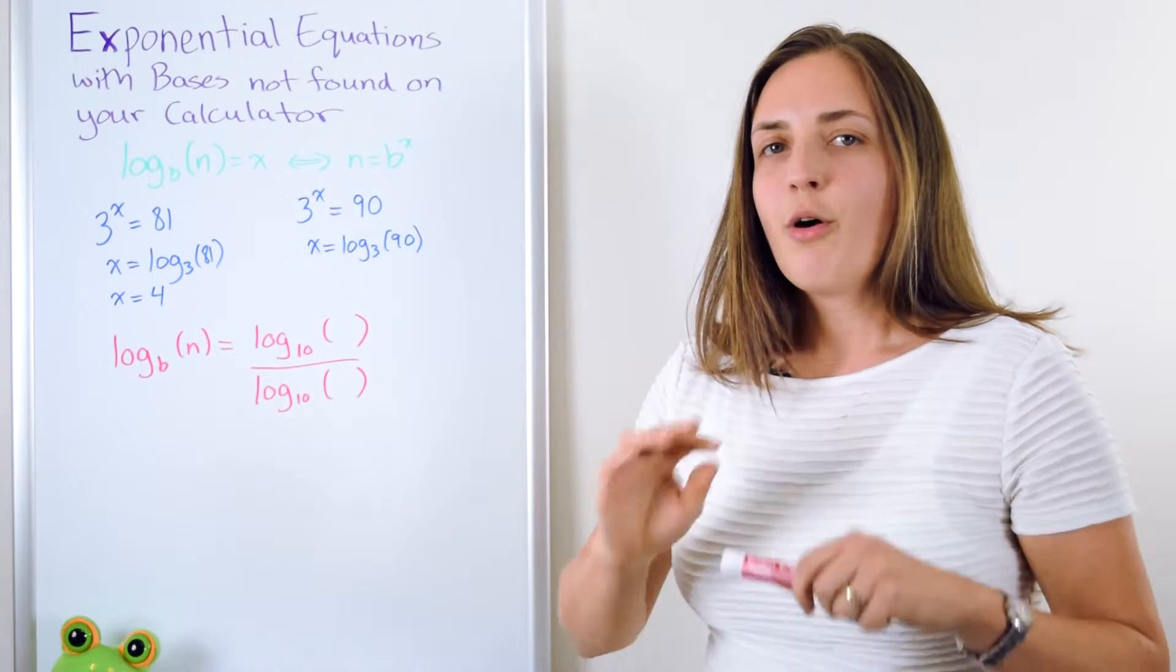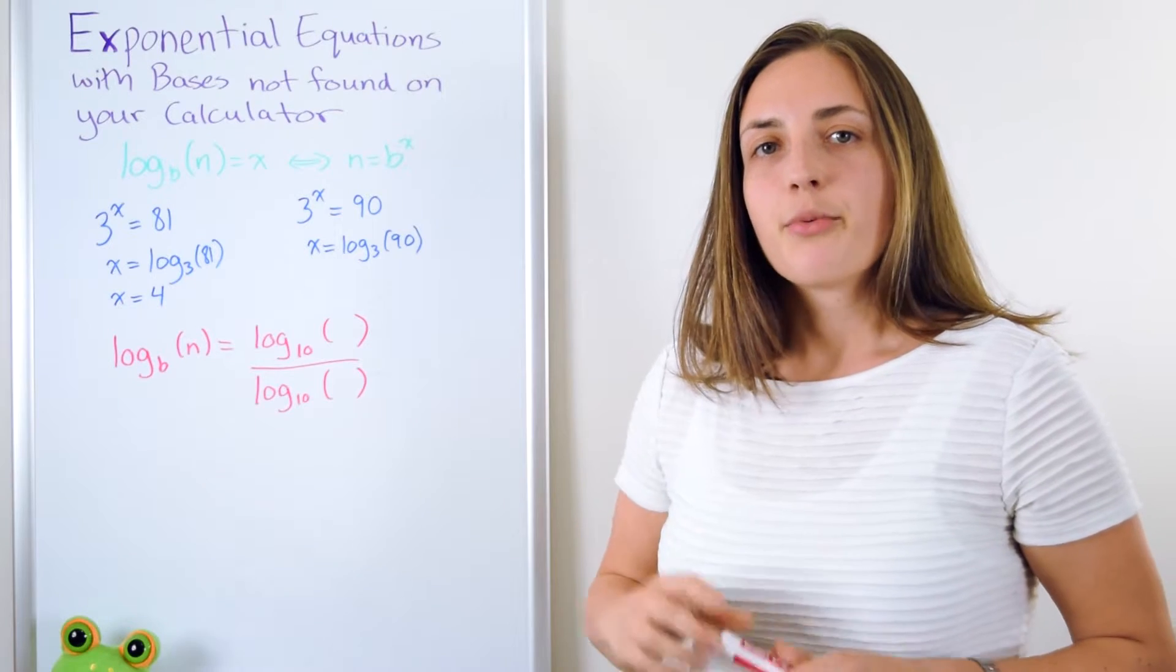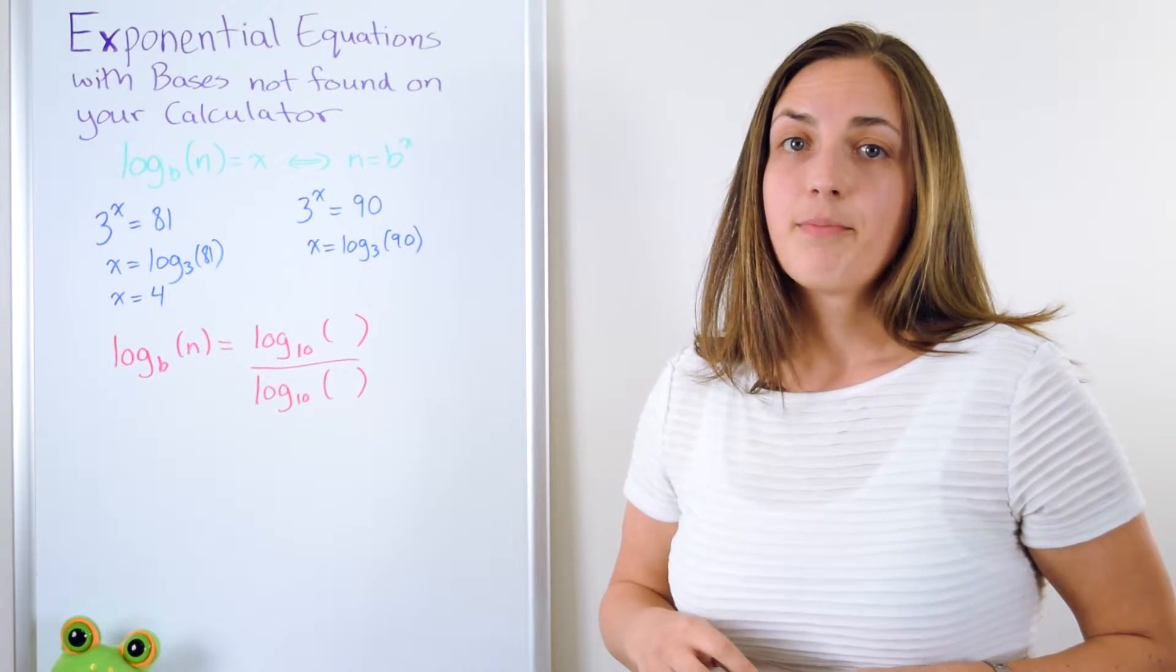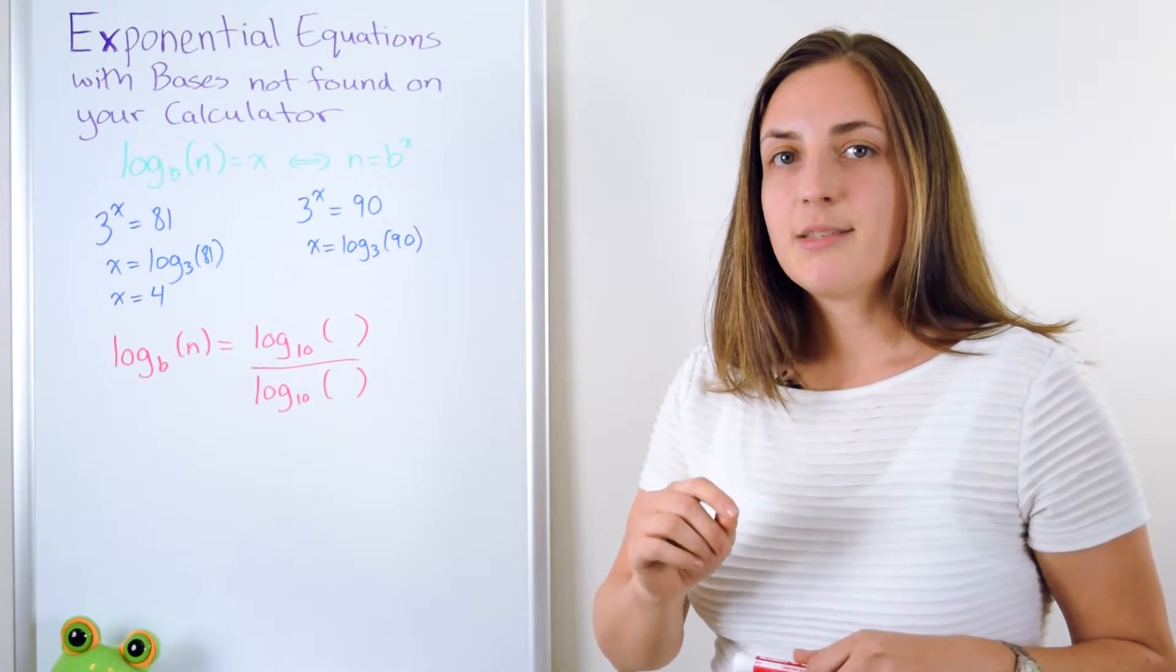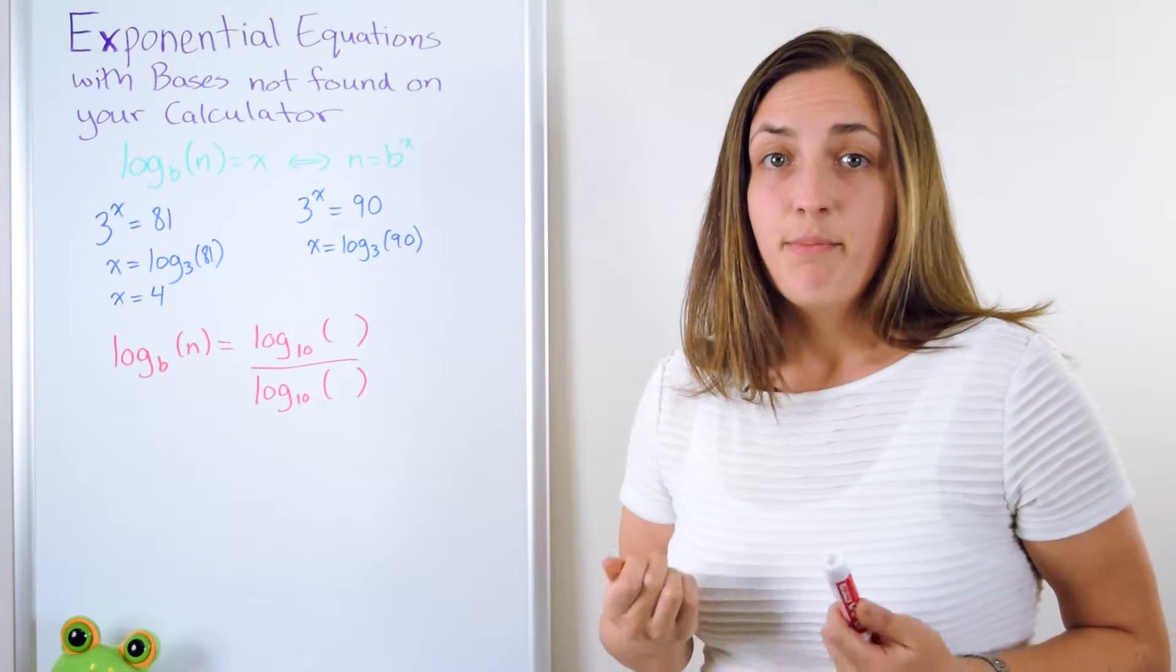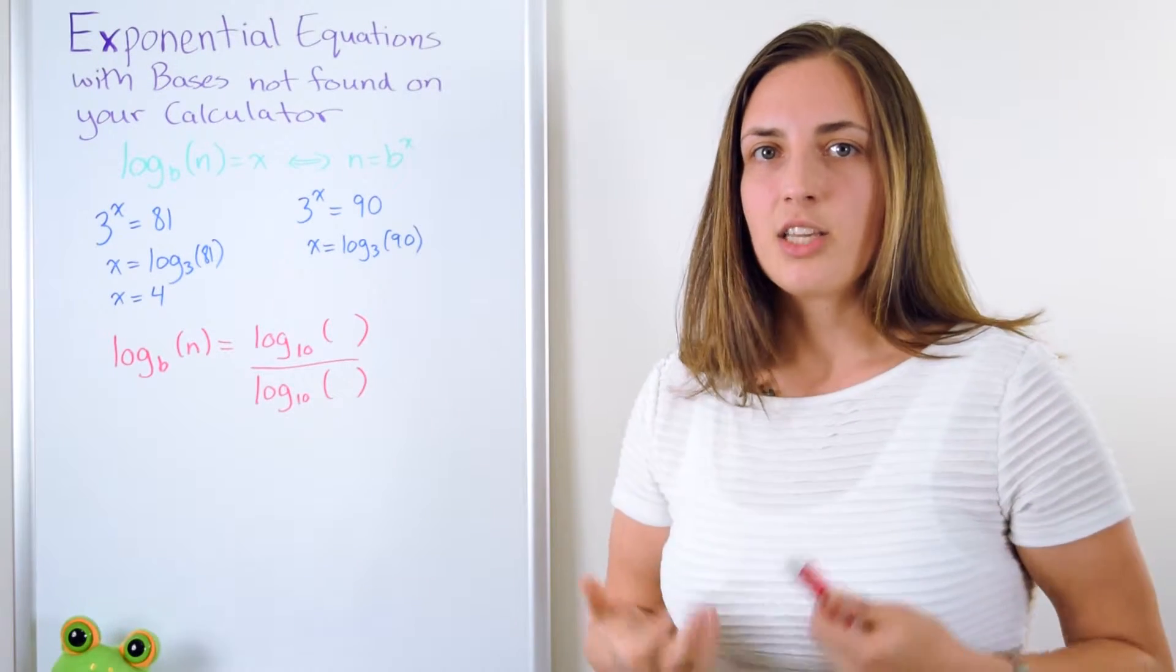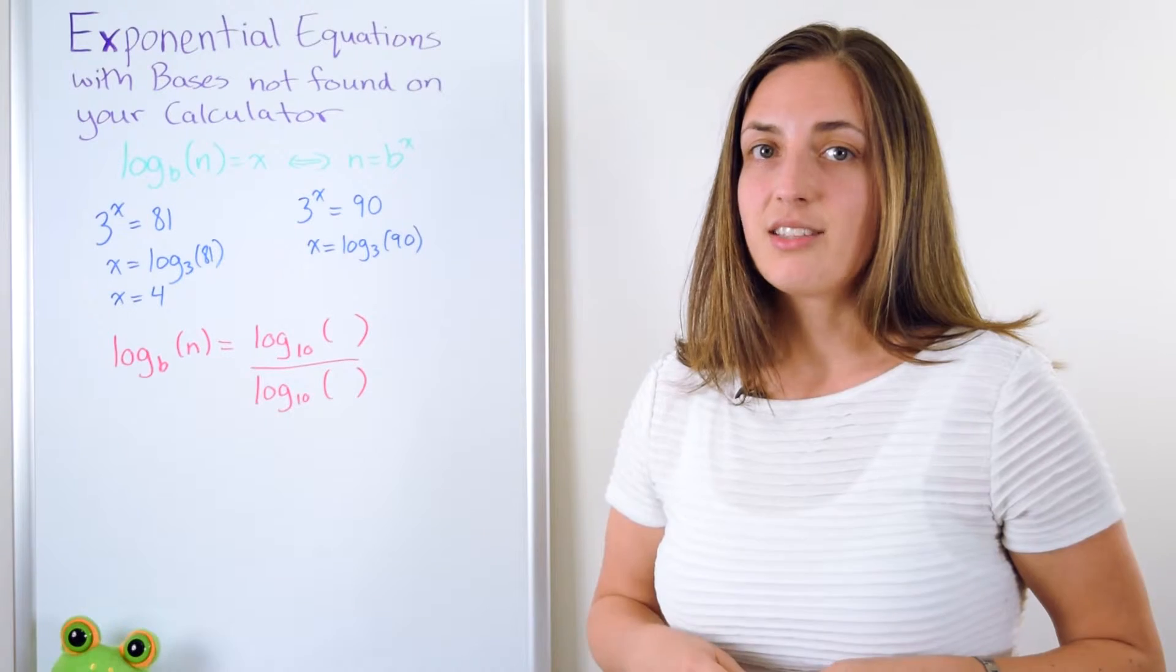I've written down most of the rule for the change of base. The reason why I've written down most of it is because I want to show you a key way to remember it. If you have log base b of a number n and base b is not something on your calculator, so you want to change the base into a nice base that you know is on your calculator such as e or 10, then you can do it like this.